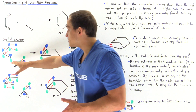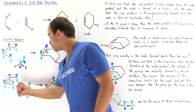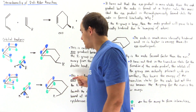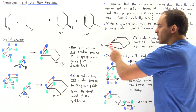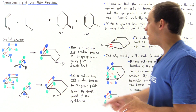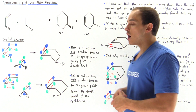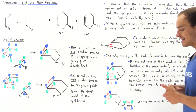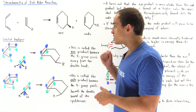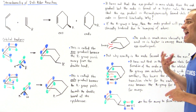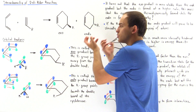If the alkene approaches with the R group pointing away, the R group will point away in the product. If the R group points toward the diene as it approaches, it will point toward the pi bond in the product. This gives the exo product — where R points away from the double bond — and the endo product — where R points toward the double bond of the cyclohexene product. The question is under which conditions the exo or endo will form.